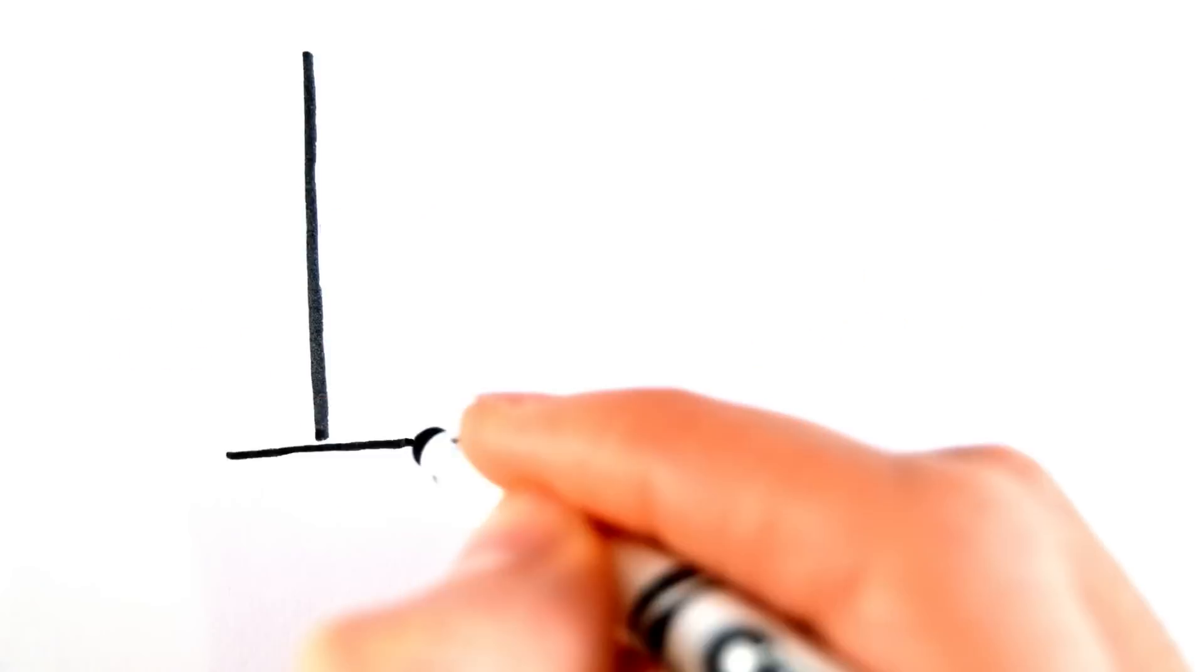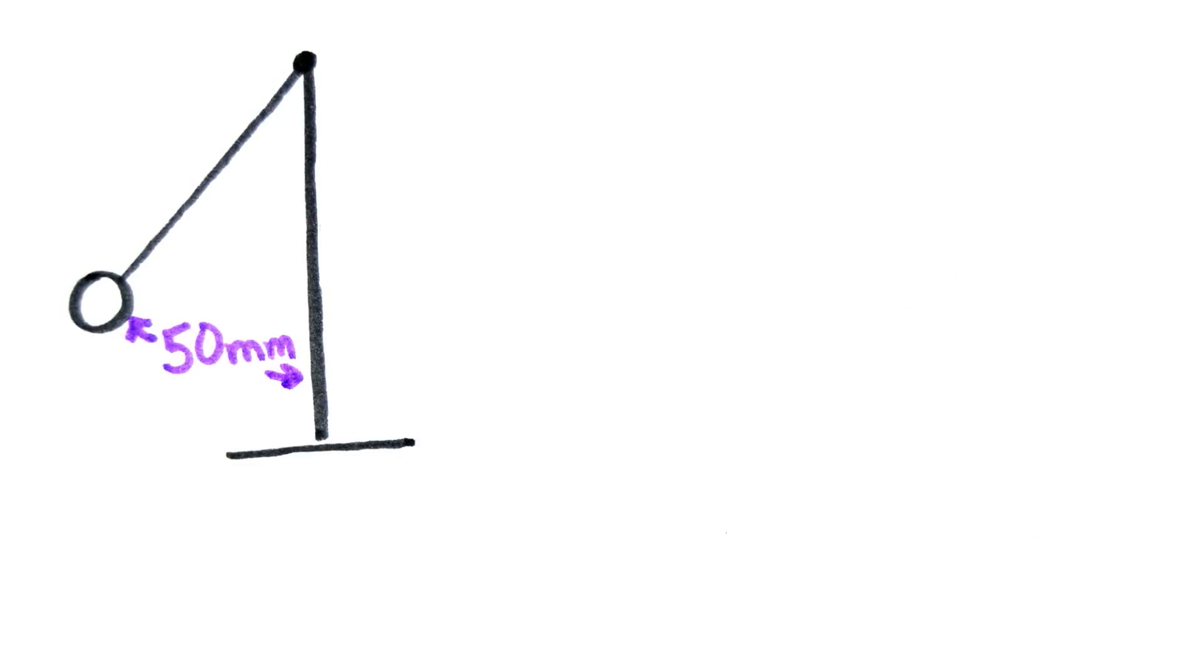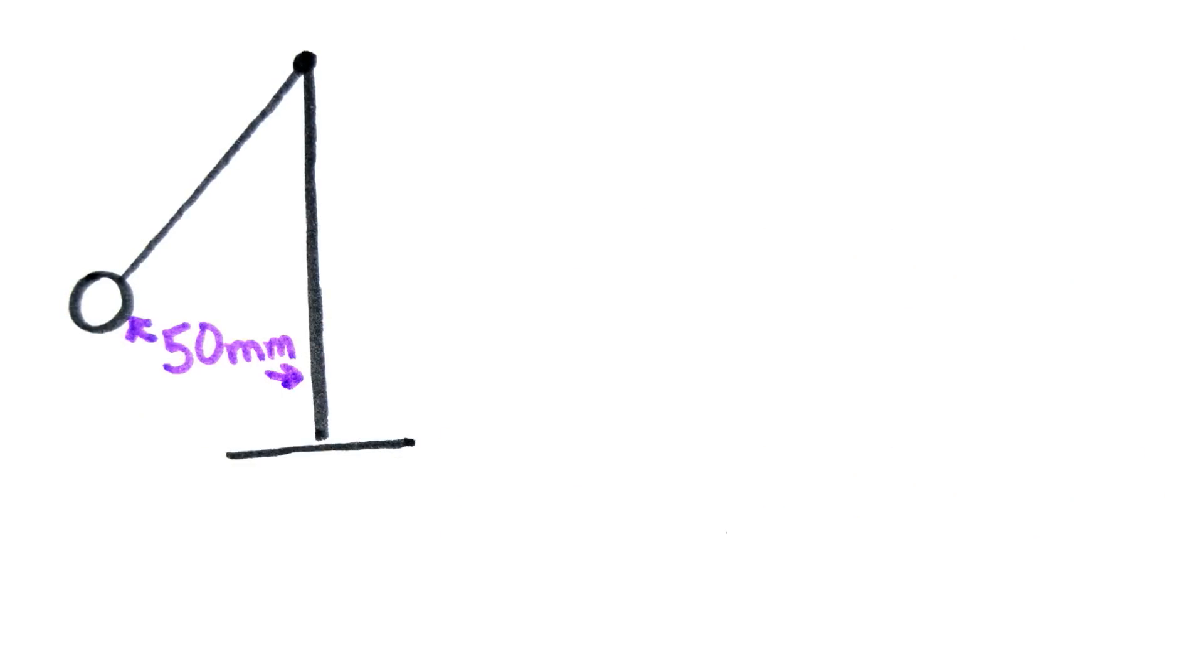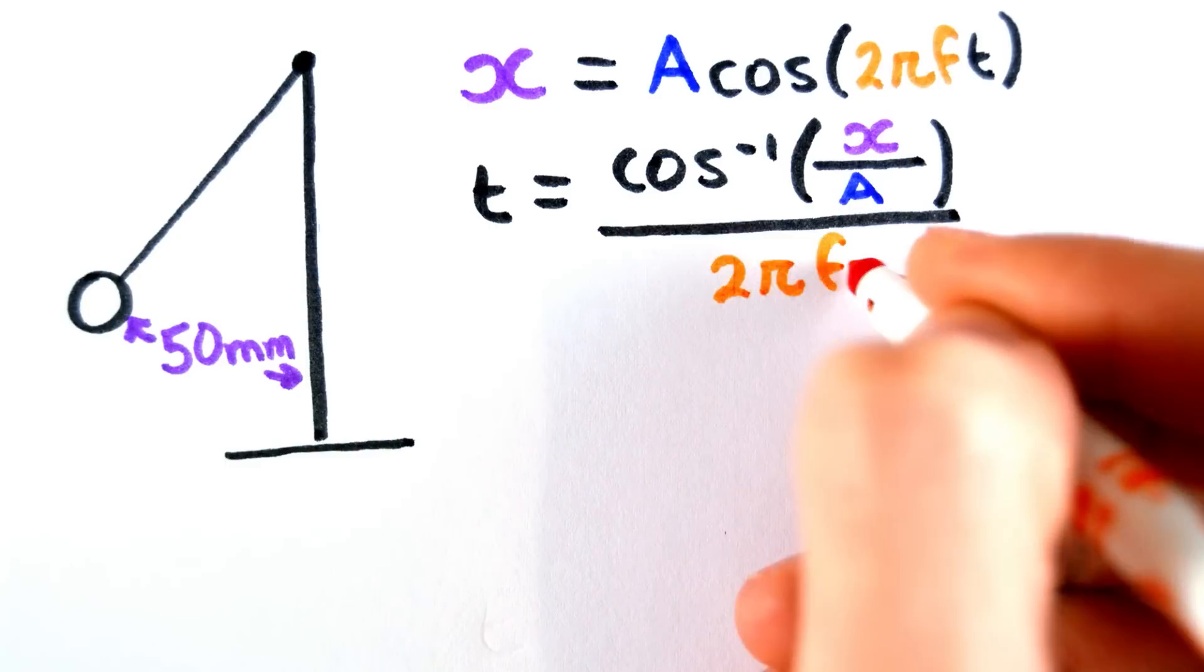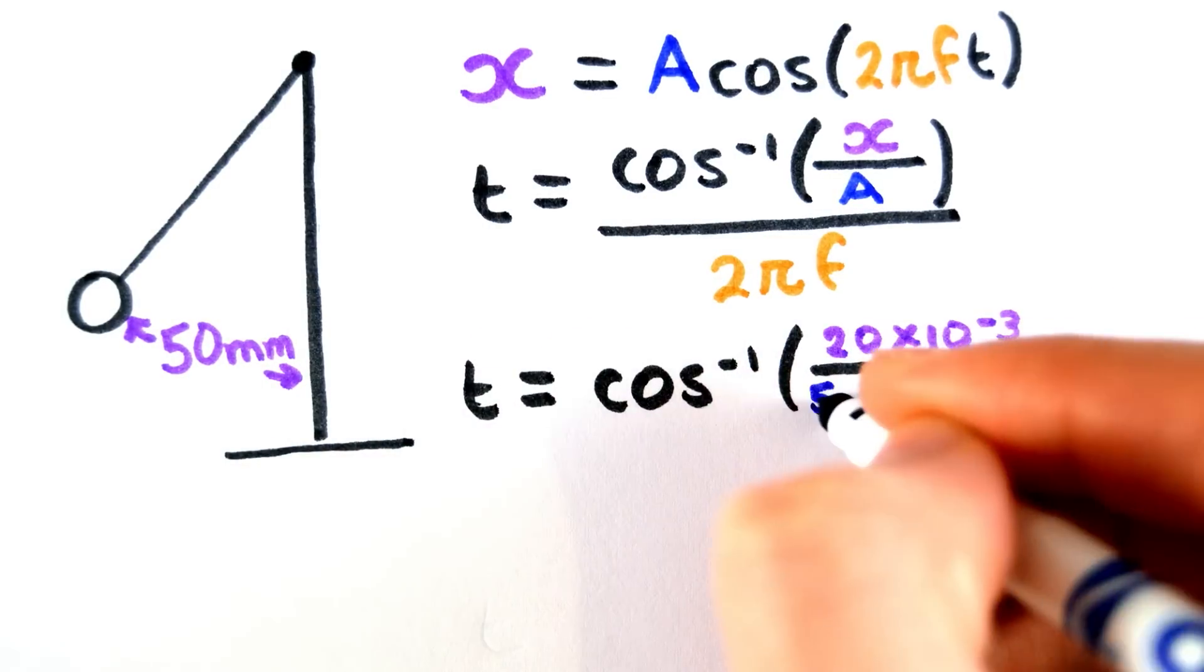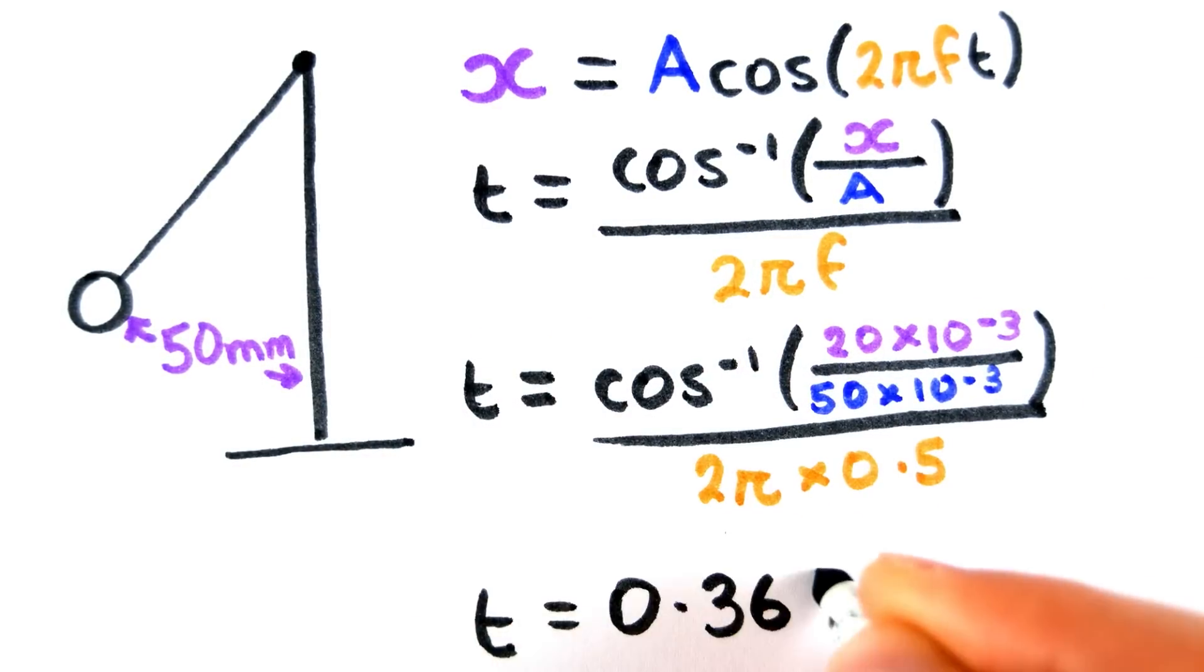For example, a pendulum swings with an amplitude of 50 mm and has a frequency of 0.5 hertz. To find the time that the pendulum has a displacement of 20 mm, we can just rearrange for t to give 0.369 seconds.